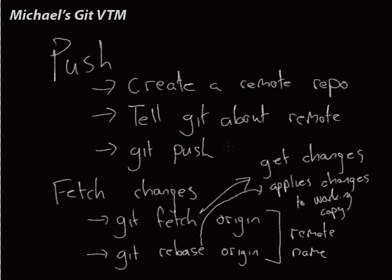Remember that because git has a full copy of the repository, when we fetch the changes, that updates our repository so that we have the same content as what's at the remote. However, it doesn't change our working checked out copy — we do that using rebase. So again, it's a two-step process, but it's there for a good reason.